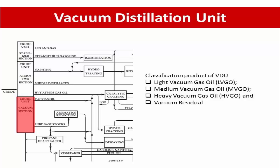The Vacuum Unit distillates are classified as the following before sending to fluid catalytic cracking or FCC feed hydrotreater. The products are light vacuum gas oil, medium vacuum gas oil or MVGO, and heavy vacuum gas oil or HVGO.